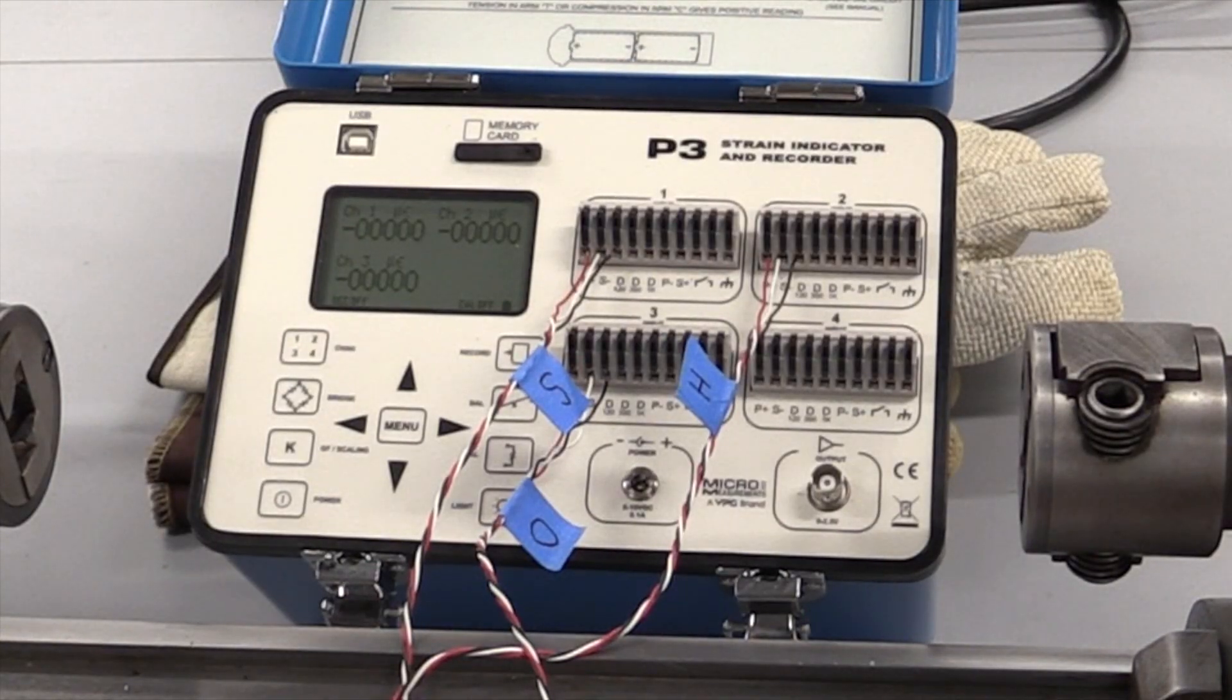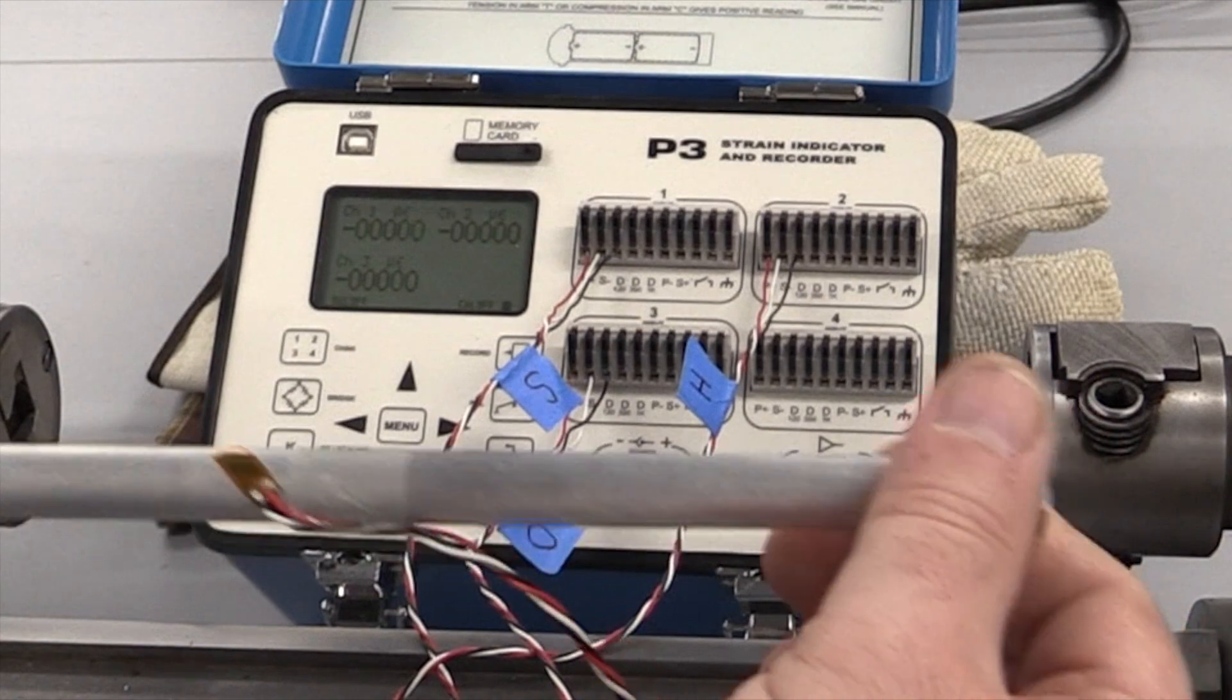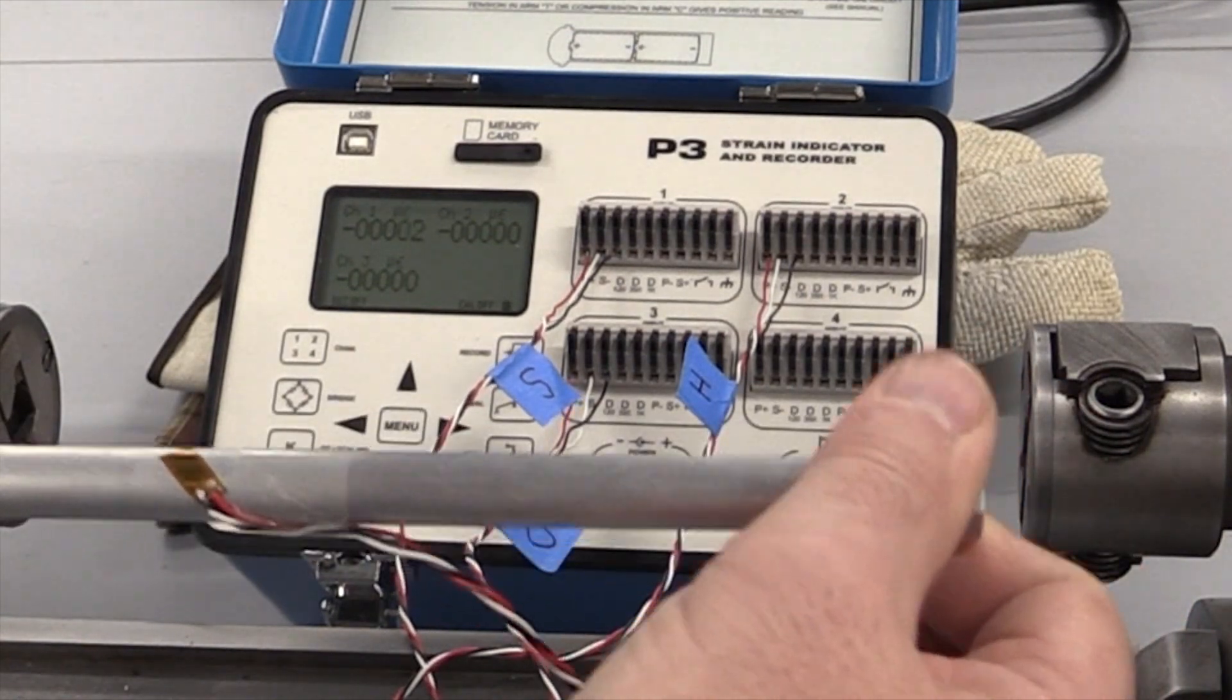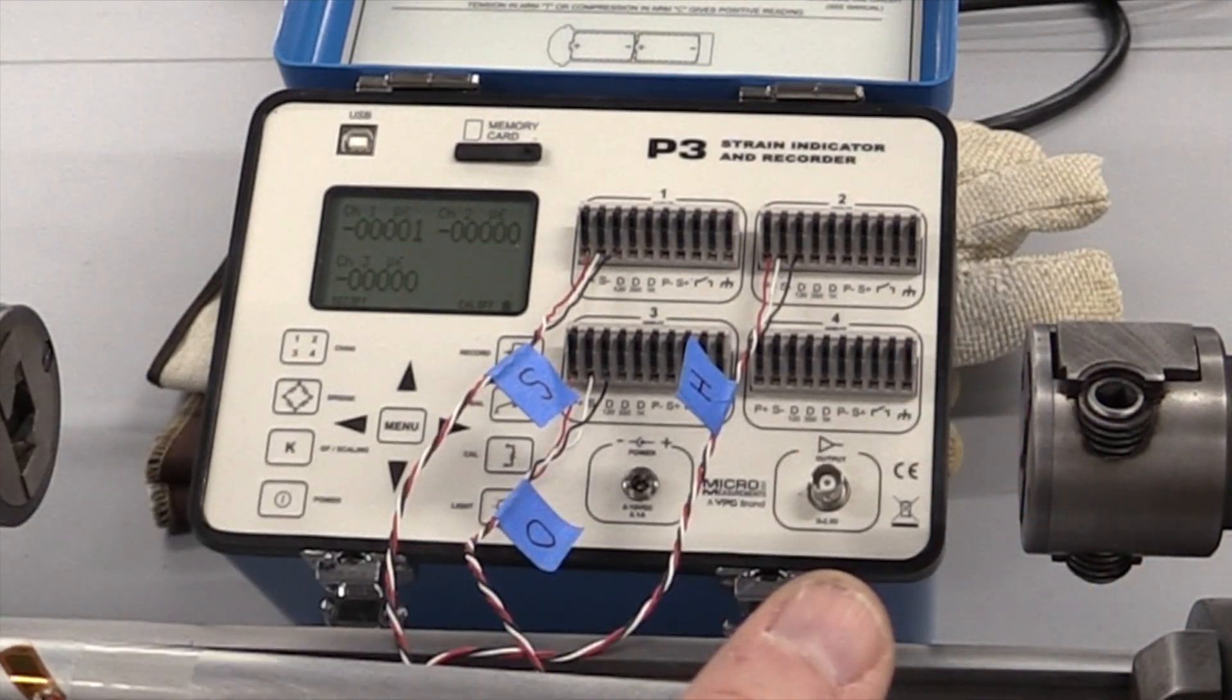If I grab a sample and I put some torque on it I can tell that I've got the solid sample because that's channel number one and I put some torque on it and I'm twisting it and I can see some strain being developed on that sample.